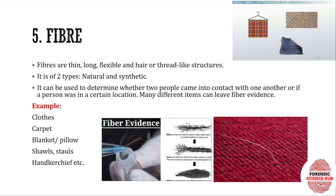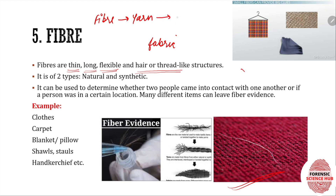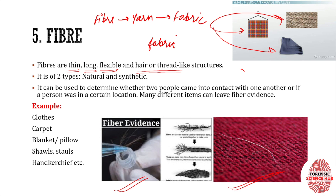Next we have fiber. Fiber is a very thin, long, flexible, hair- or thread-like structure seen in clothes or anything made of fabric. Fibers are the building blocks of fabrics — fibers are first turned into yarn, and that yarn is further turned into fabric, which leads to production of various materials like clothing and textiles.